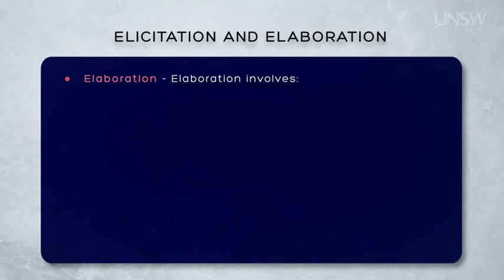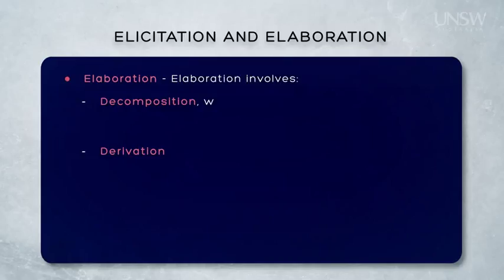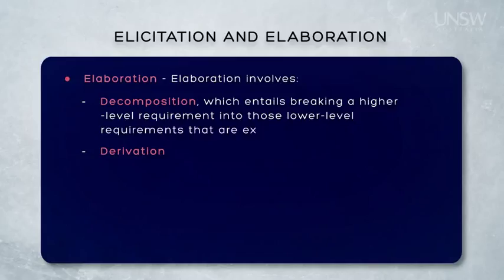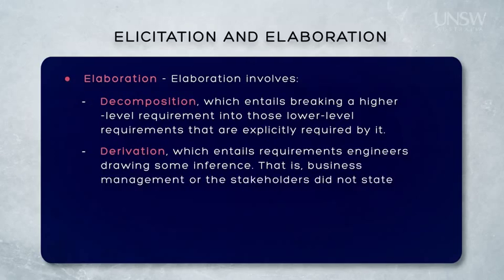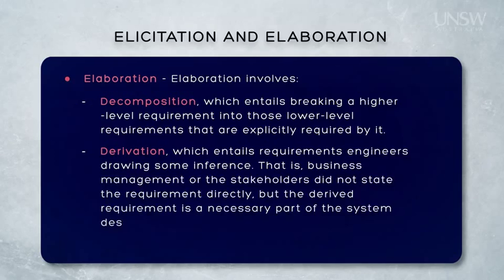On the other hand, elaboration involves analysis, which would conclude that some element is necessary as a result of the business or stakeholders' intentions. This analysis is either decomposition or derivation. Decomposition involves breaking the high-level function into those low-level functions that are explicitly required by it. Derivation, on the other hand, entails requirements engineers drawing some inference — the function was not stated directly, but is a necessary part of the system design if one or more directly stated functions are to be met.